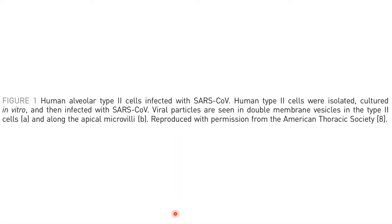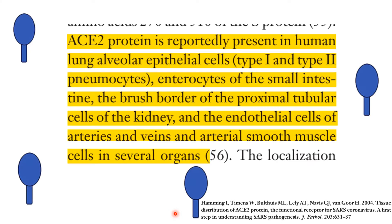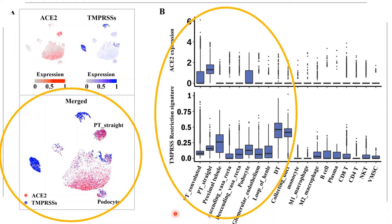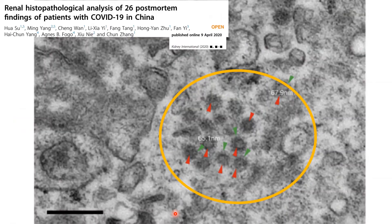ACE2 receptors are not only seen in type 2 pneumocytes. They are also seen in type 1 cells, in the endocytes of the human intestine, in the brush border of the proximal convoluted tubule in the kidney, and in the endothelial cells of arteries as well as smooth muscle cells. In the kidney, ACE2 is mainly seen in the proximal convoluted tubule, while TMPRSS2 is found in almost all other areas. A post-mortem autopsy of a kidney from a COVID-19 patient in China showed viral inclusion inside the kidney.